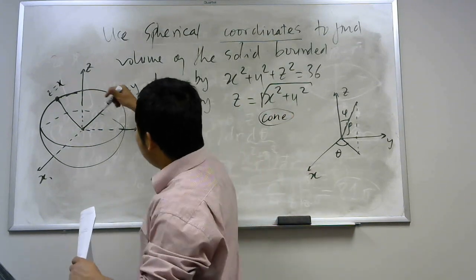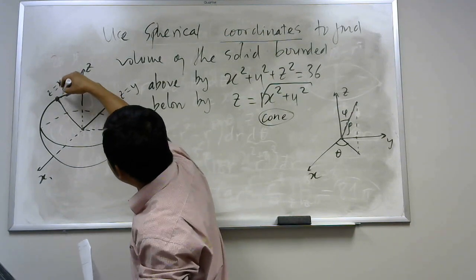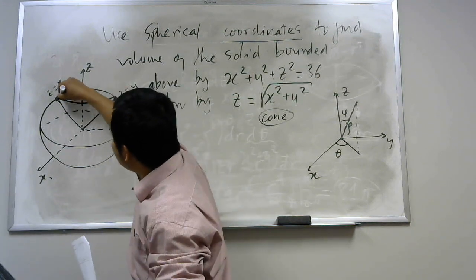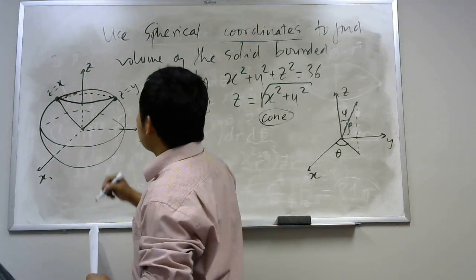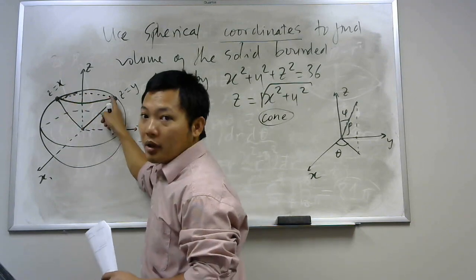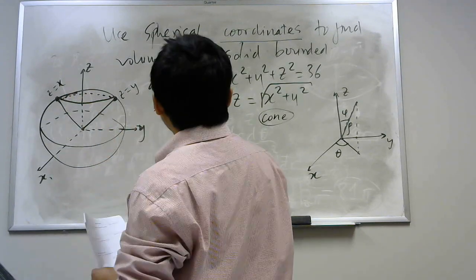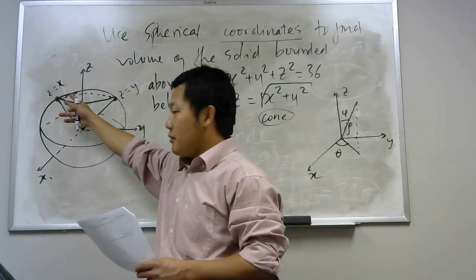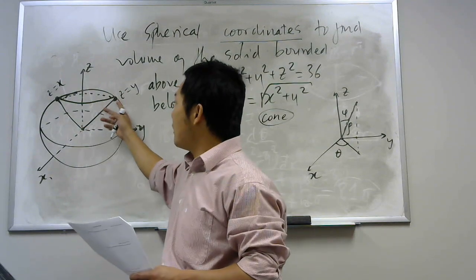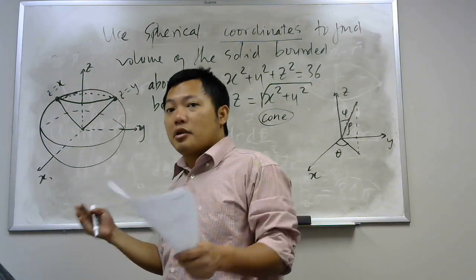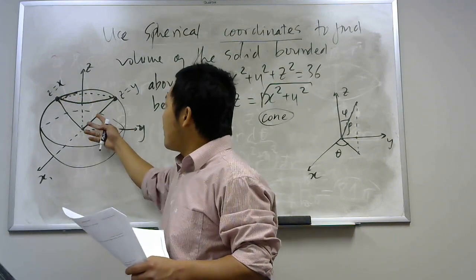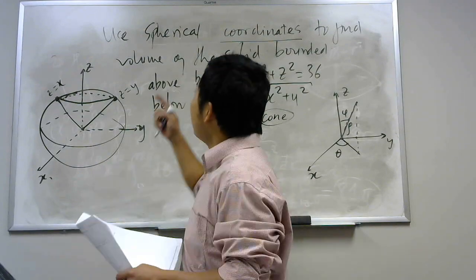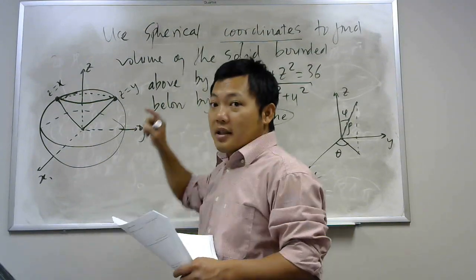Our solid looks like this: you have a cone that intersects with the sphere somewhere. We have to find the volume of this part. In this case, spherical coordinates are extremely useful because our region — if you write the triple integral formula — the region of integration is a part of a sphere, so spherical coordinates are very useful.